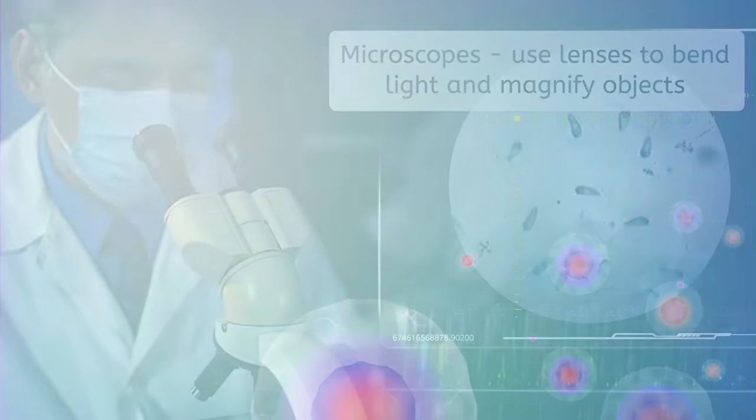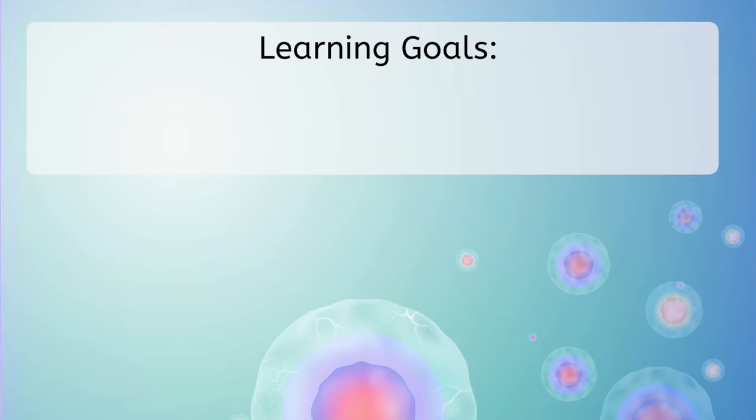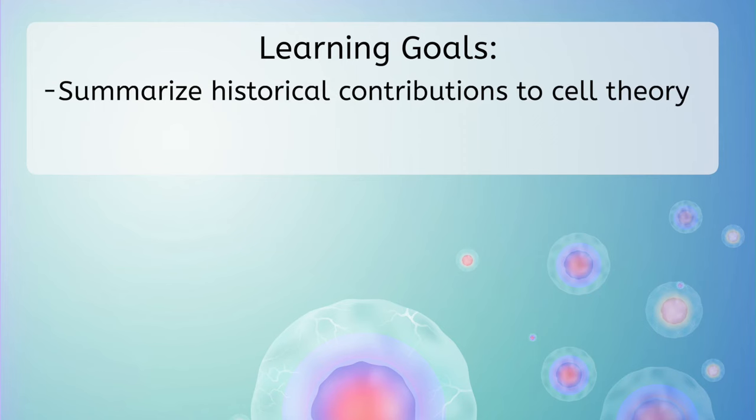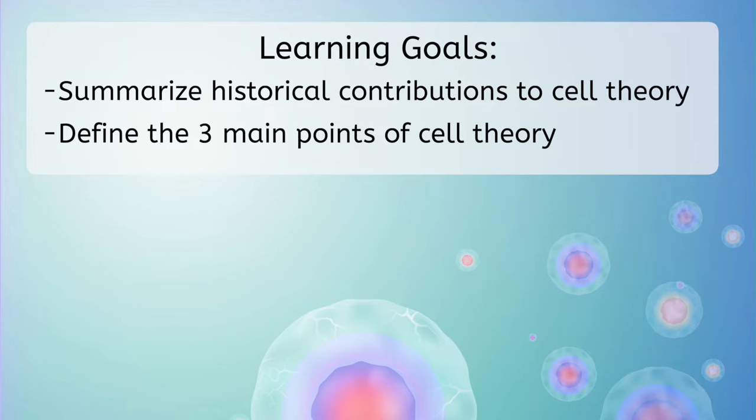You can find out more about modern microscopes in the PDF for this lesson, but for now just know that a microscope is a device that uses lenses to bend light and magnify objects. Before we get back to our mystery microscope picture, let's go over our goals for today. We will summarize historical contributions to cell theory and define the three main points of cell theory.